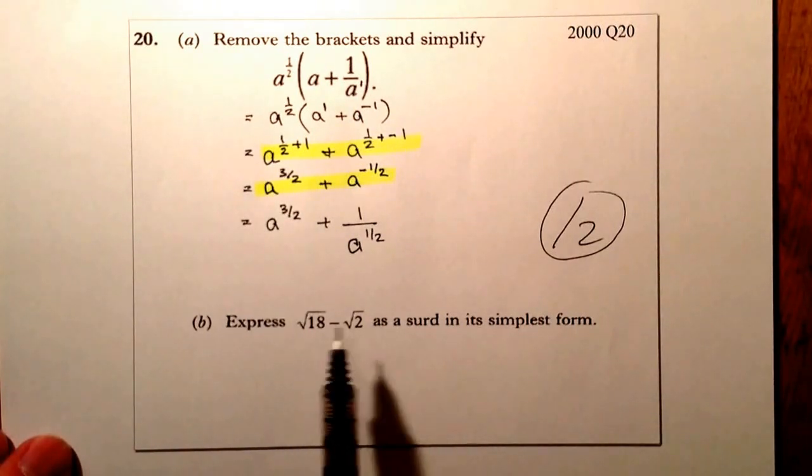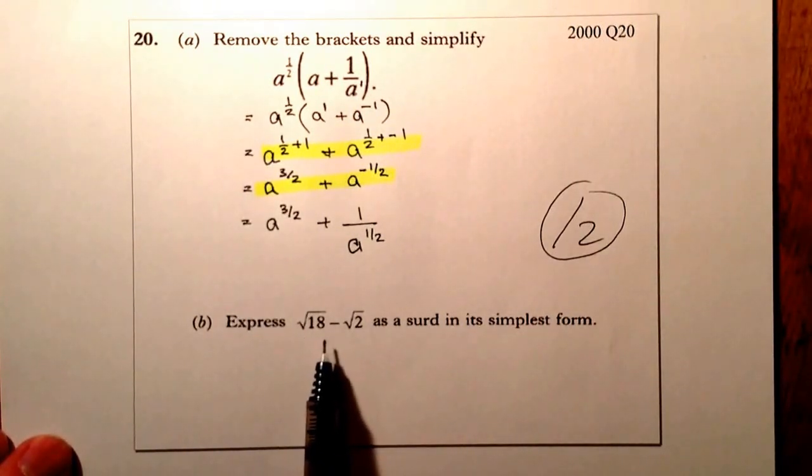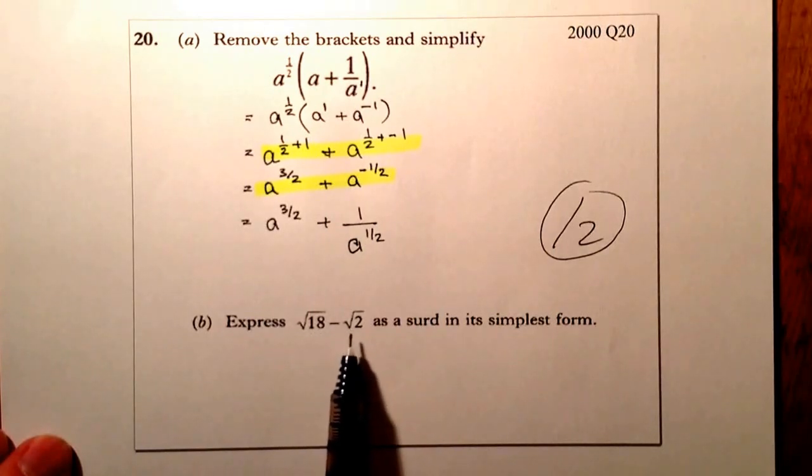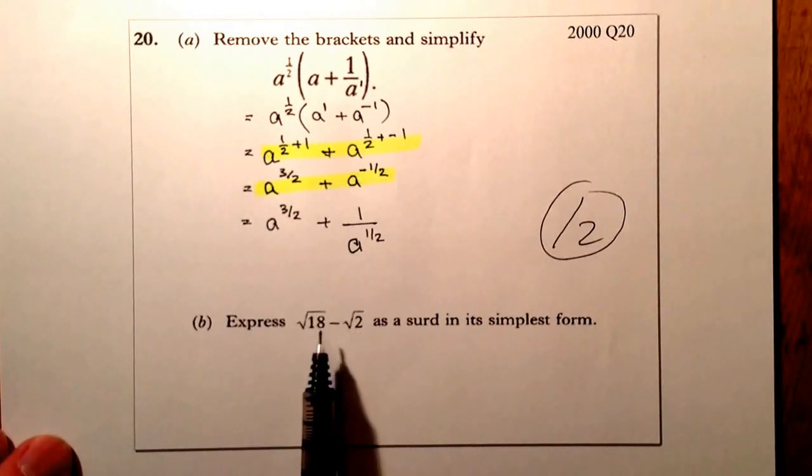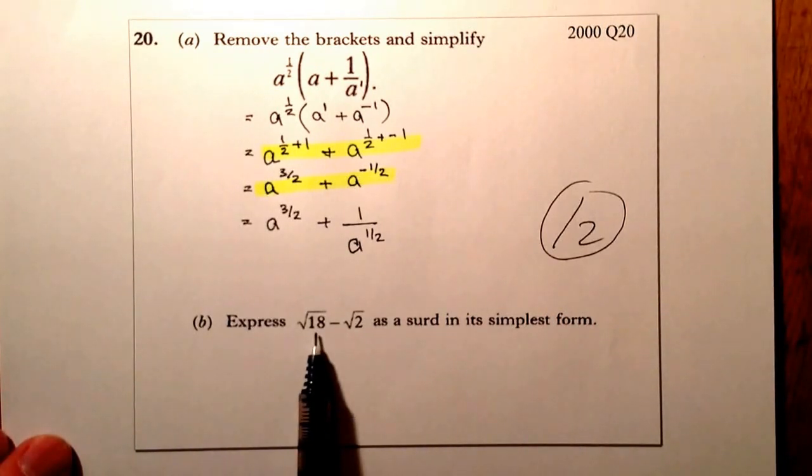there's usually a clue somewhere that can help us work something out. So what I can see here is the clue that I'd be looking for is the root 2. I can't simplify that anymore, so I would expect that when I simplify this one, I'm going to get a root 2 coming out of it somehow. So 2 times 9 gives me 18.